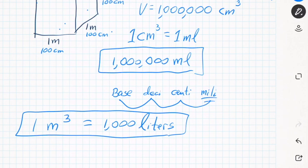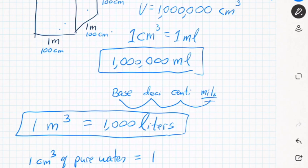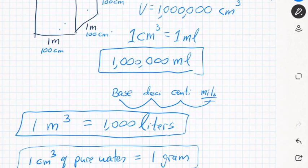One more relationship: for pure water, 1 cubic centimeter equals 1 milliliter and also equals 1 gram. This gives a direct connection between a linear measurement, volume, and mass — which is one of the key advantages of the metric system.